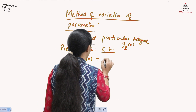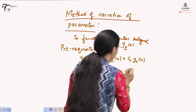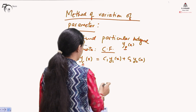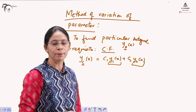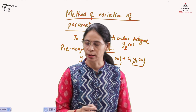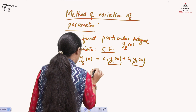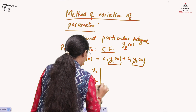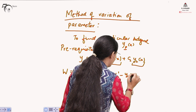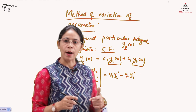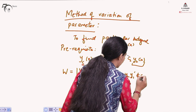Let us say the complementary function is C₁Y₁(x) + C₂Y₂(x). The Wronskian of this linear differential equation is determined as the determinant of Y₁, Y₂ and Y₁', Y₂' — which simplifies to Y₁Y₂' − Y₂Y₁'. Since Y₁ and Y₂ must be linearly independent, this Wronskian cannot be zero.